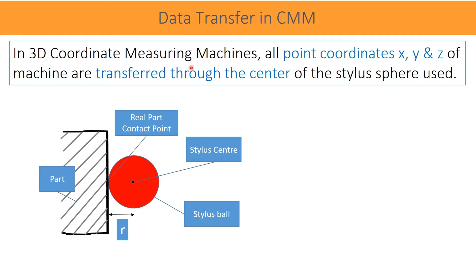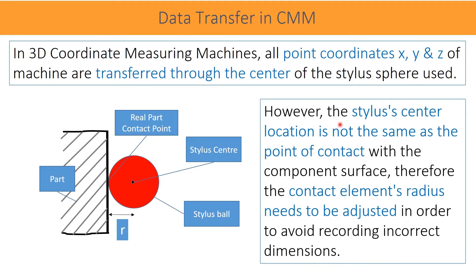In all three coordinate measuring machines, point coordinates which are read from the machine scales X, Y, Z are transferred from the center of the stylus sphere or diameter. However, the stylus center location is not the same as the point of contact with the component surface. Therefore, the contact element's radius needs to be adjusted in order to avoid recording incorrect dimensions.